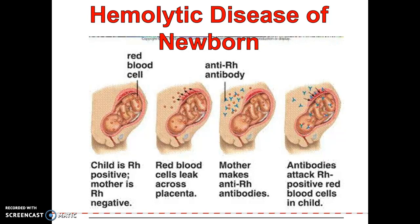So if they have an Rh positive baby and the mom is Rh negative, the first baby's fine. The second baby, though, if it's also Rh positive and the mom is Rh negative, the mom will have developed antibodies against the Rh antigen. Those little antibodies will pass through the blood — they're meant to protect the baby — but since they're against the baby, they'll actually attack the baby.